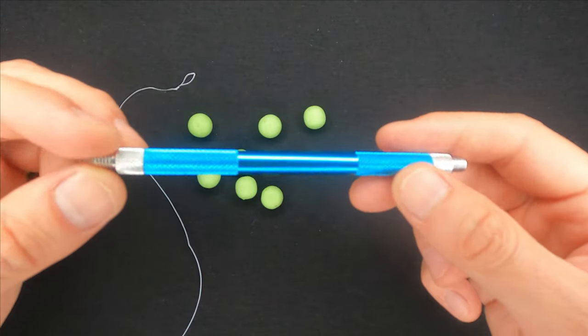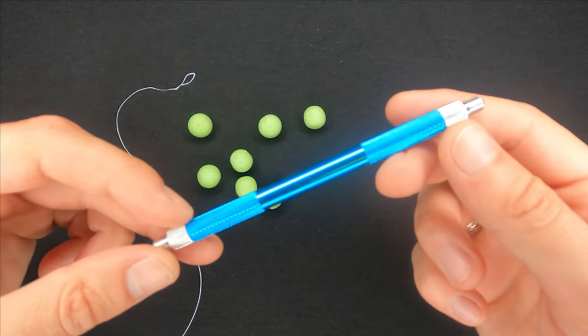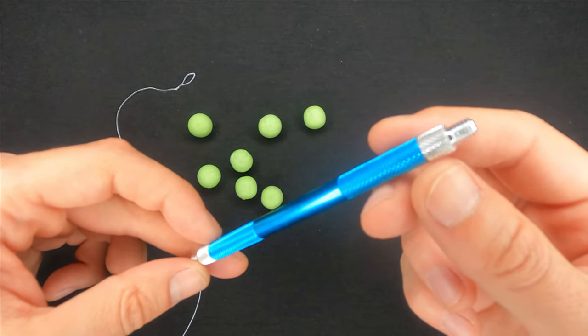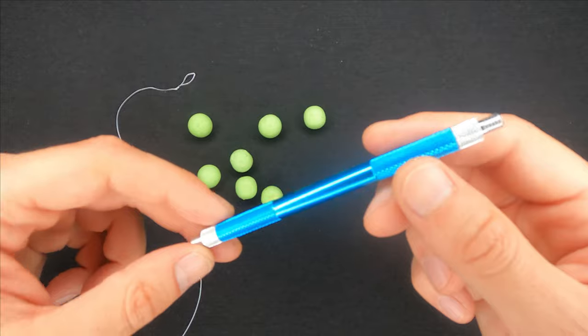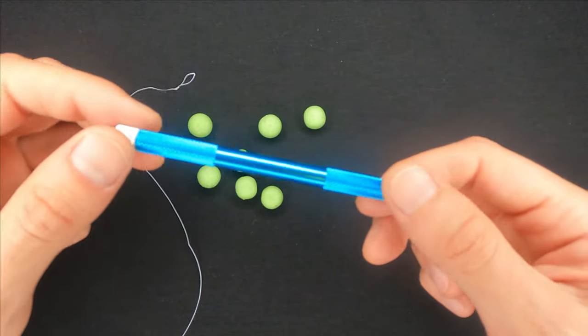Also, you'll get 200 bait stops if you decide to buy one for yourself using the link in the description. It comes in three different colors: green, blue, and silver.